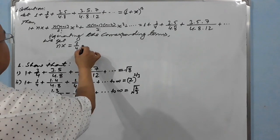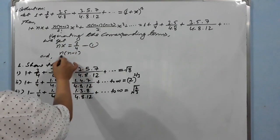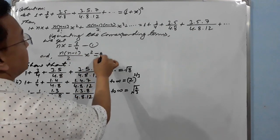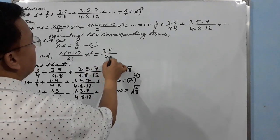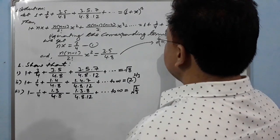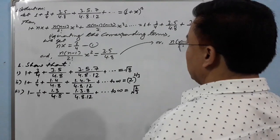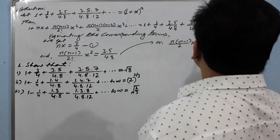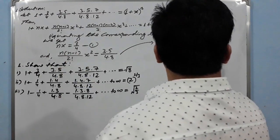From the second equation: n(n−1)/2! · x² = (3·5)/(4·8). We only need two equations. Simplifying the right-hand side: 15/32. So n(n−1)/2 · x² = 15/32.